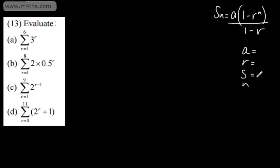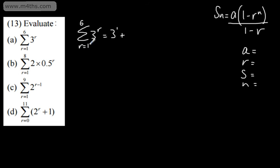a is the first term, r is the ratio, s is the sum, and n is the number of terms. It's important to stress that r here is not the ratio. On the first one, I'm going to write this out in long form. So the sum from r equals 1 to r equals 6 of 3 to the power of r. When r equals 1, that gives 3 to the power of 1. Then we add 3² + 3³ + 3⁴ + 3⁵ + 3⁶. So our first term is 3 to the power of 1, which is just 3.